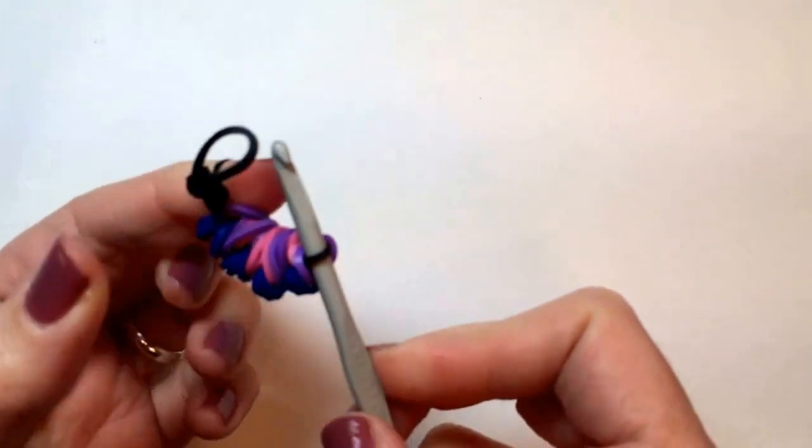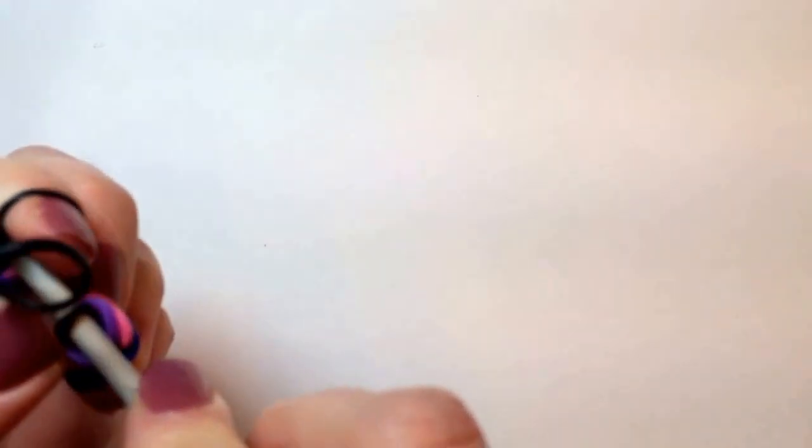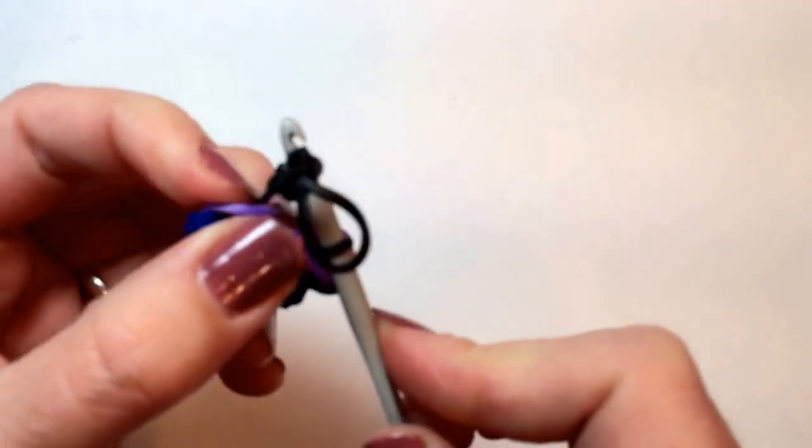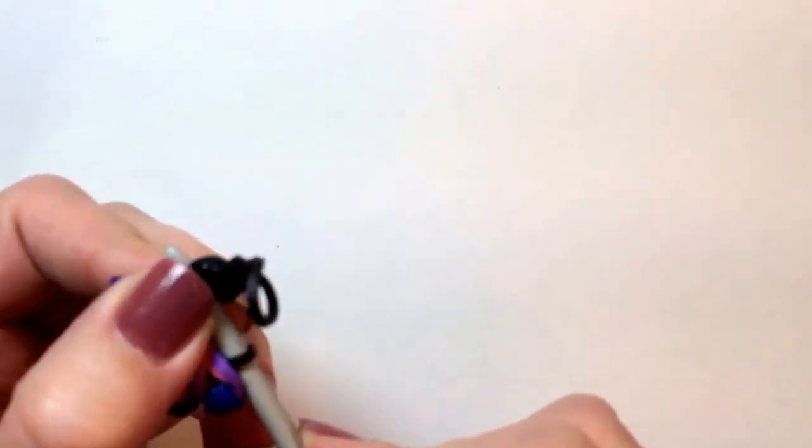Once you've got those all there, you're going to place the black rubber band over so that you don't lose circulation in your finger, which is a good idea.